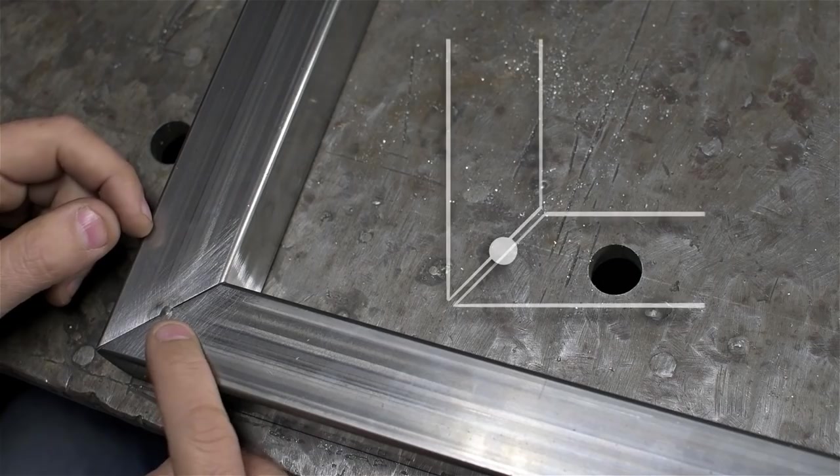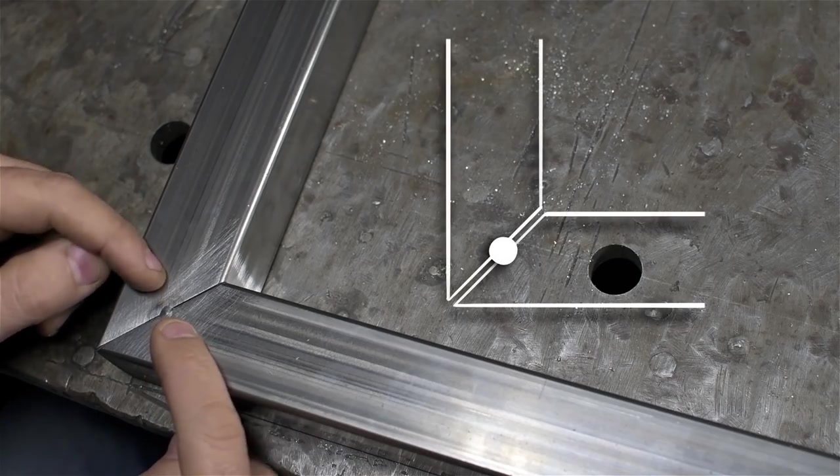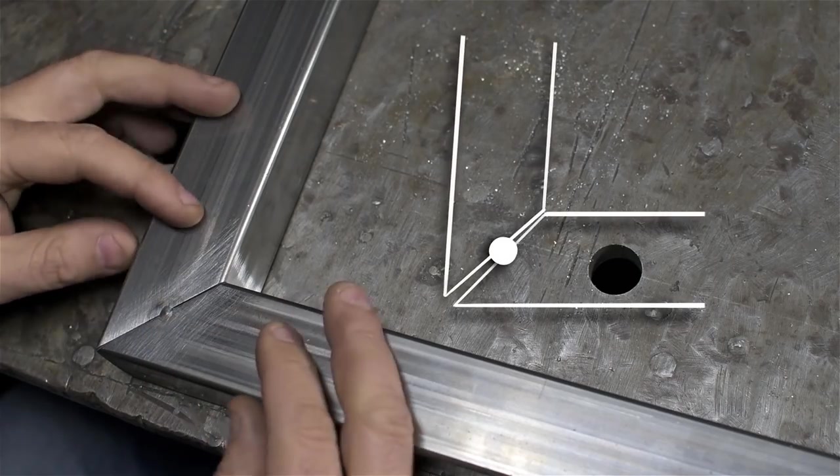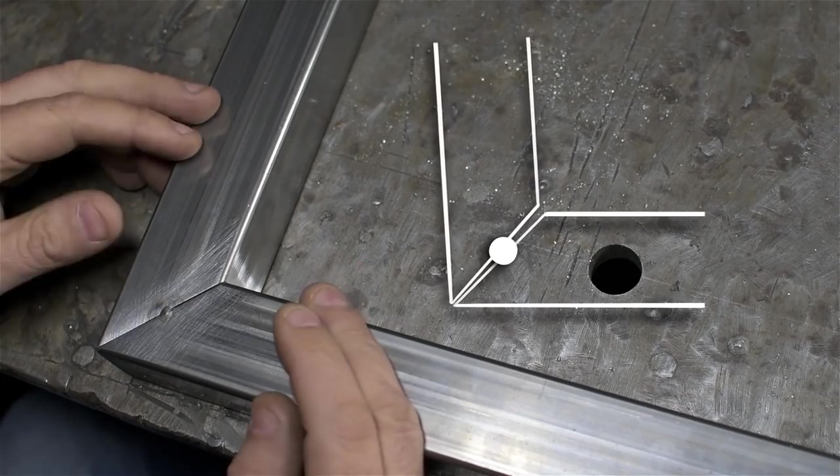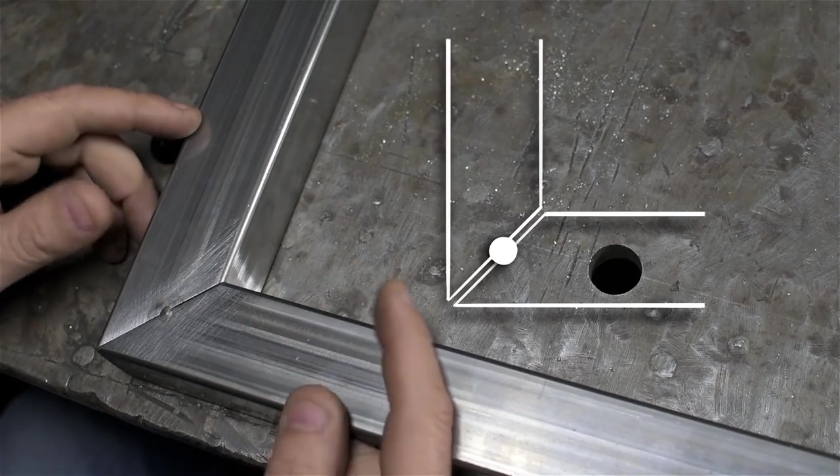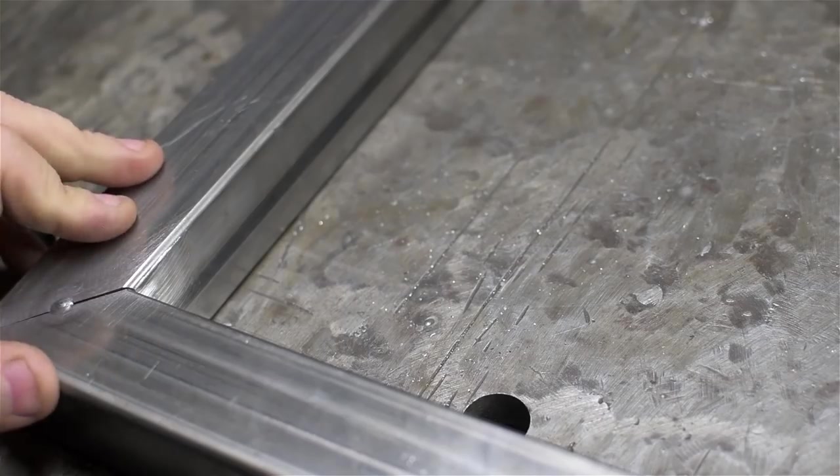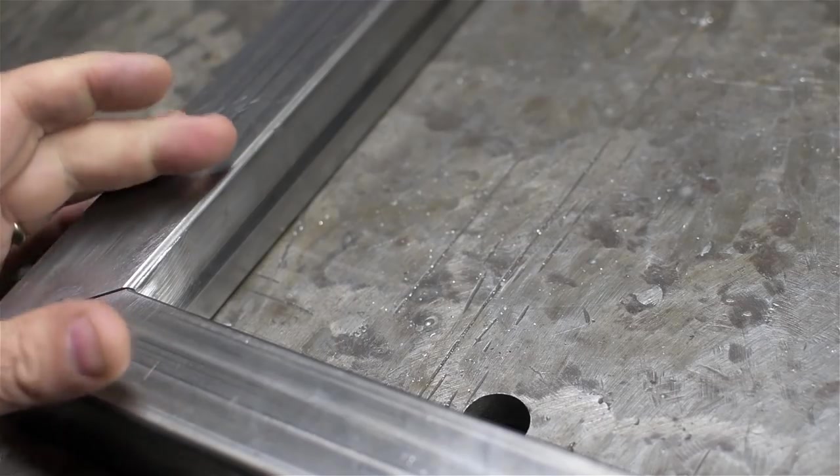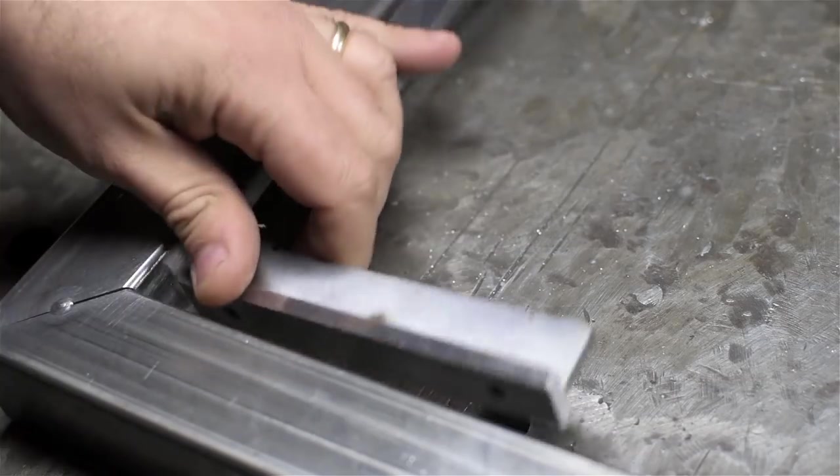And ideally what that might do is not allow the tubing to bottom out on itself anywhere when that weld nugget pulled it in closer, which means the weld is now potentially acting like a little hinge. I could still, to some extent, move this tubing around a bit. Might not be easy, but there's still room there to do that if I really needed to.